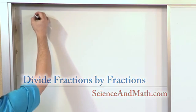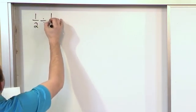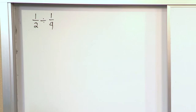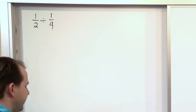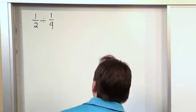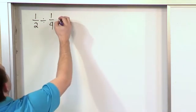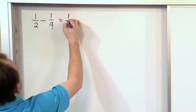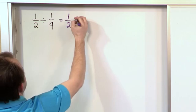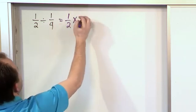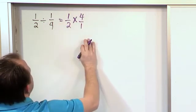So what if we have the fraction 1 half and we're dividing by 1 fourth? Well now that you know how we've handled it in the last section, it shouldn't be a huge surprise to you how we're going to do this. All we're going to do is leave the first fraction alone, change the division to multiplication, and take the second fraction and flip it over. That's all we're doing.